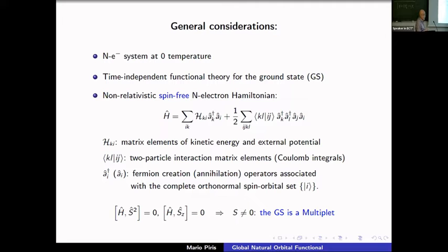My general consideration: we consider only N electrons at zero temperature. This is a time-independent functional theory for the ground state. This is our Hamiltonian, independent of spin. Here h are the matrix elements of the kinetic and external potential — the one-particle part — and the brackets are the two-electron integrals.